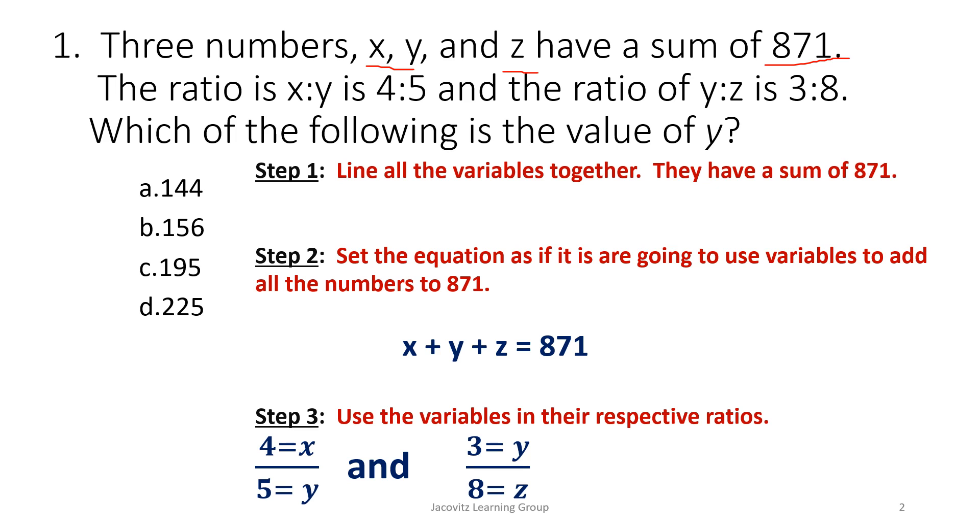Now, immediately, you had the first part of your equation given to you: x plus y plus z equals 871. You can read these steps later, or hit pause, but this is your setup. x plus y plus z equals 871.